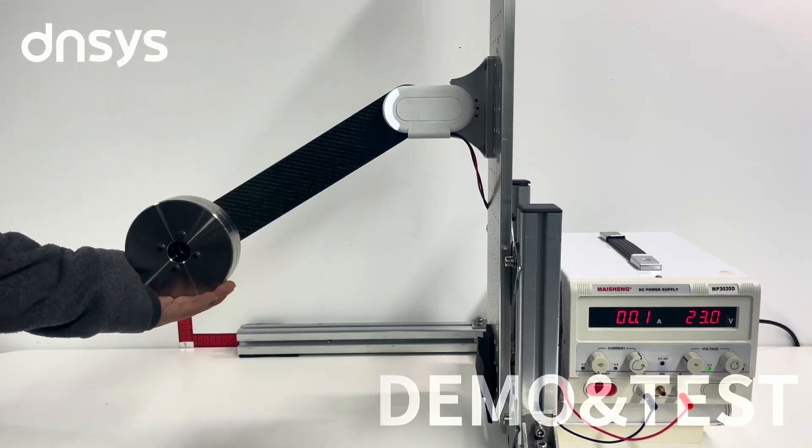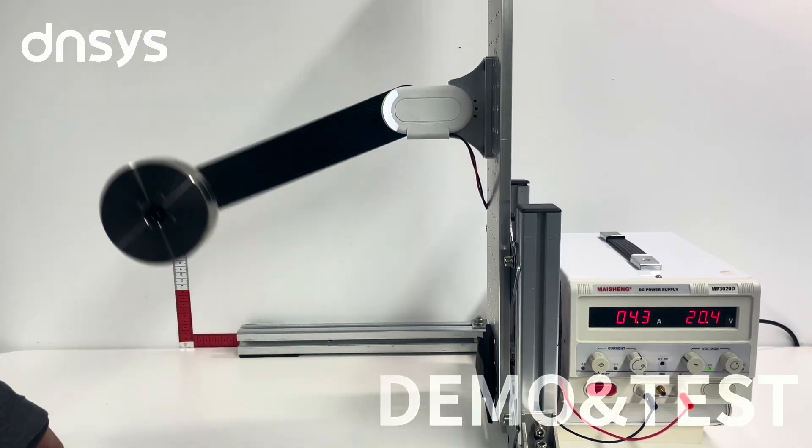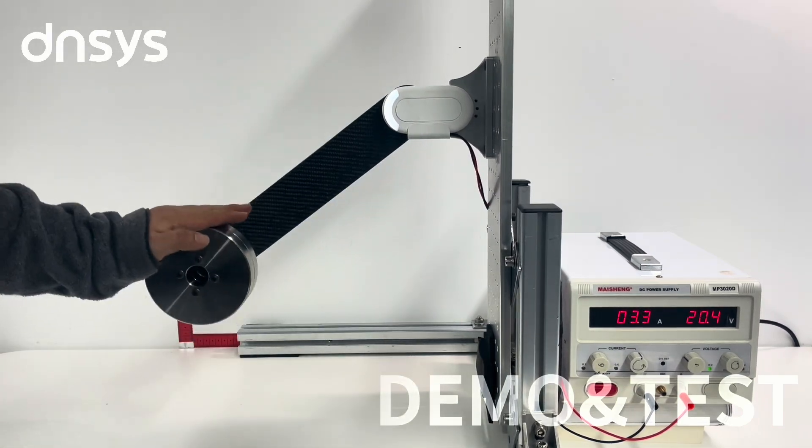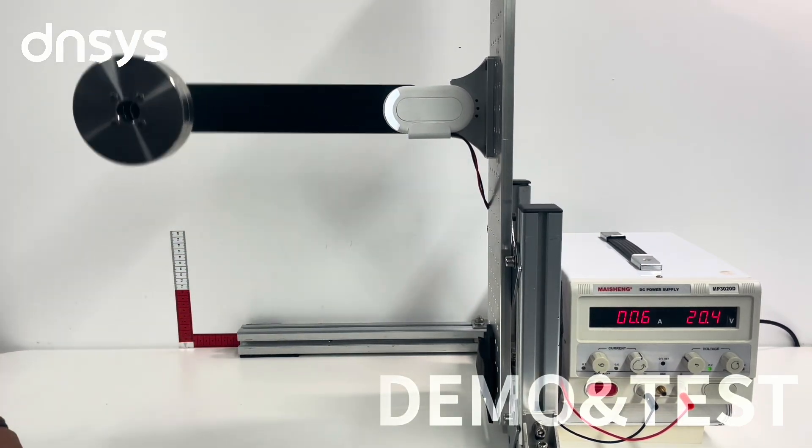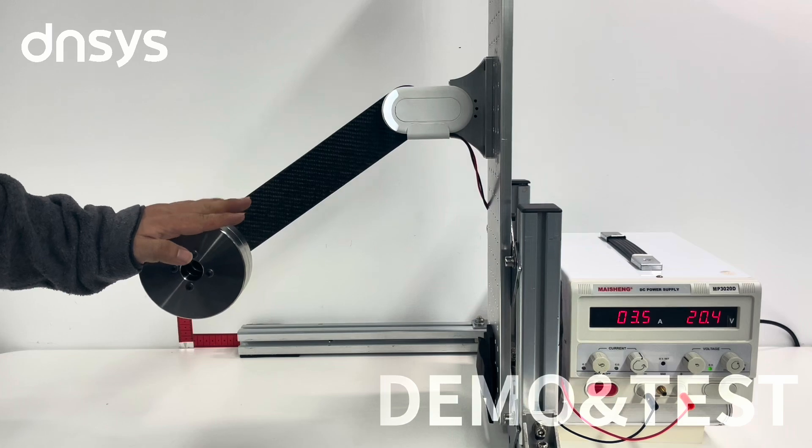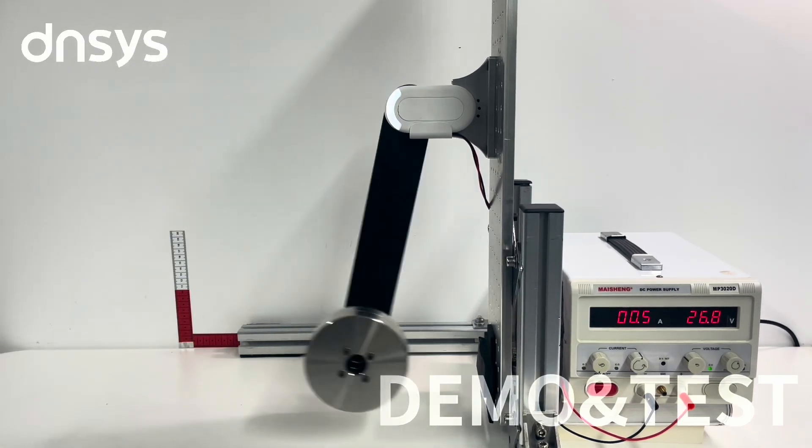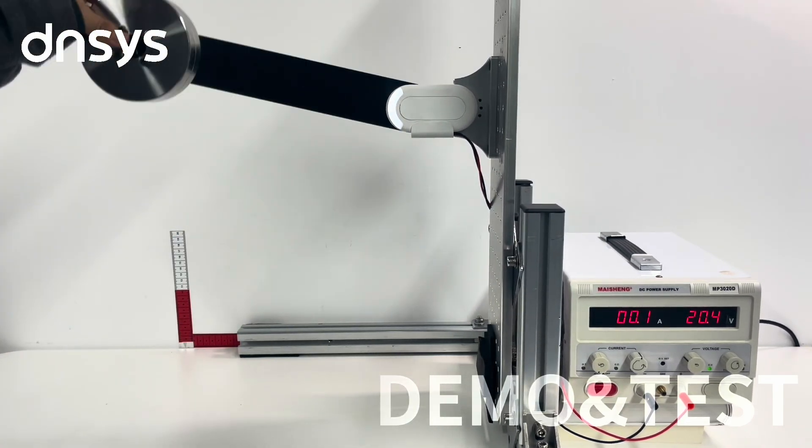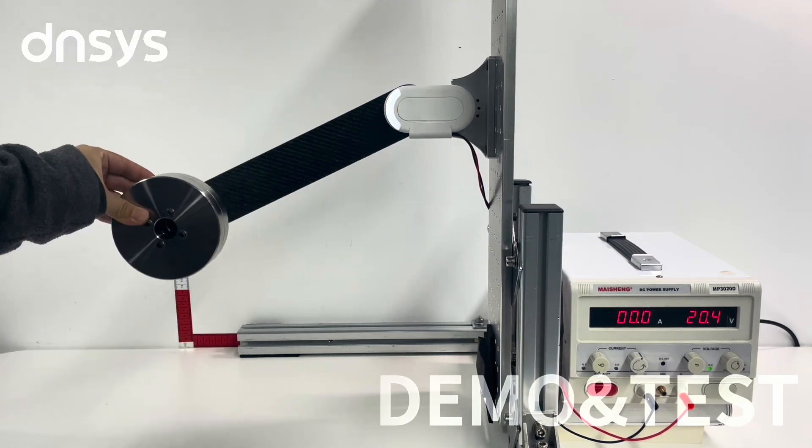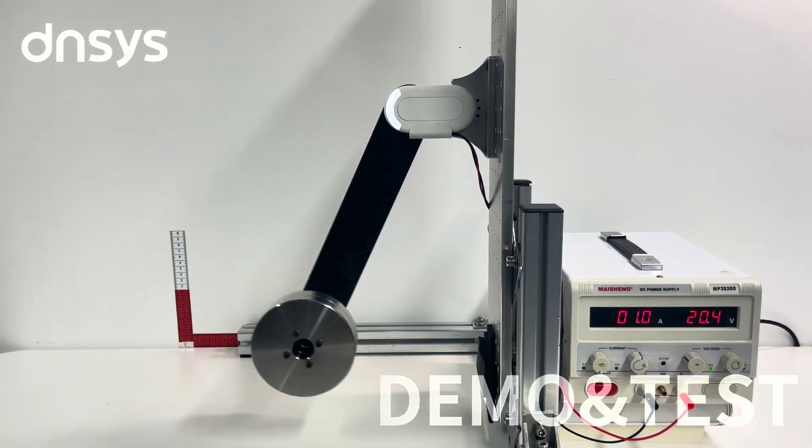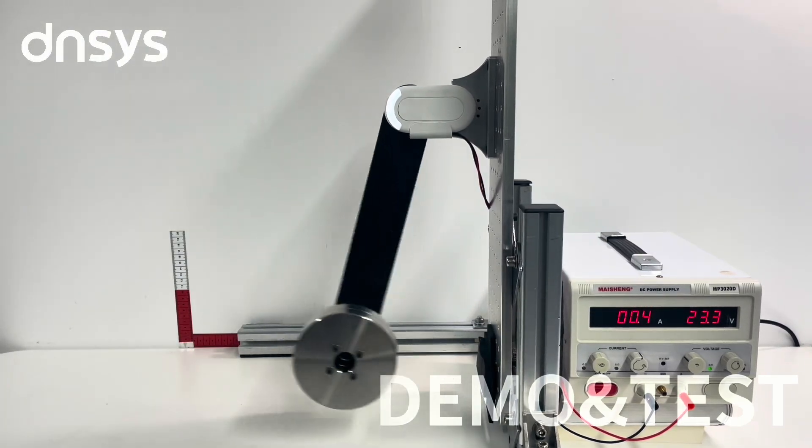In the video, you can see that my hand can interact with the motor in real time. This means that when you are wearing the X1 exoskeleton, regardless of how your gait changes, the motor can respond in milliseconds, providing you with the most comfortable support. Even in complex environments, it is both powerful and safe for use.